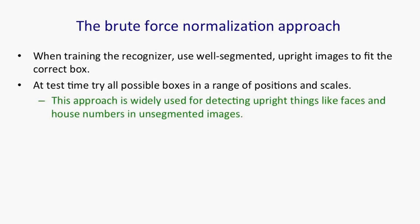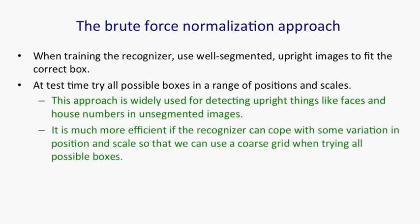This approach is widely used in computer vision, particularly for detecting upright things like faces or house numbers in unsegmented images. It's much more efficient if the recogniser can cope with some variation in the position and scale so that we can use a coarse grid when trying all possible boxes.